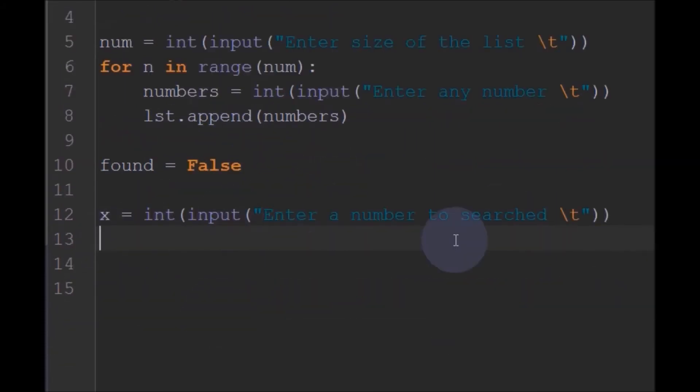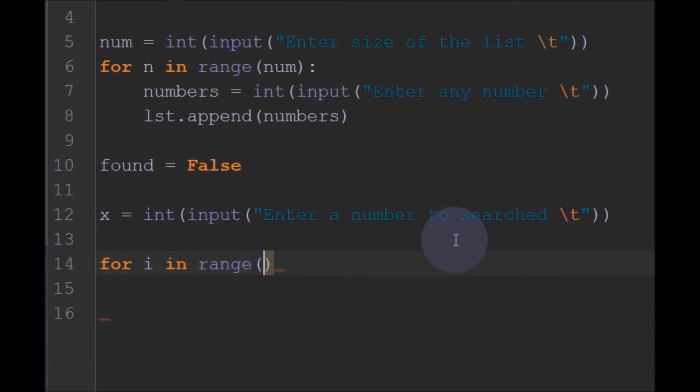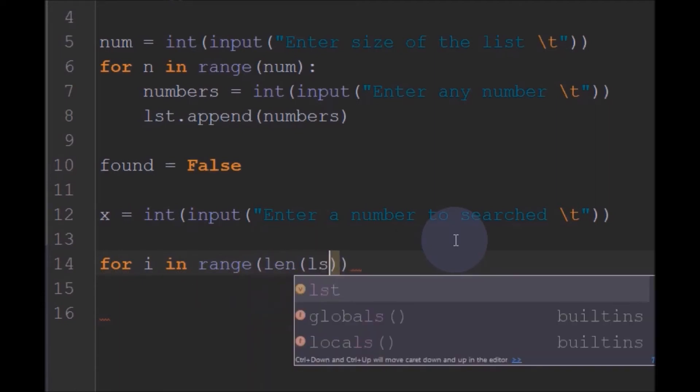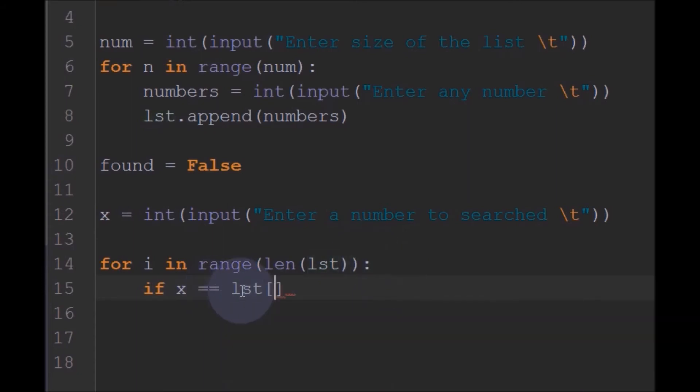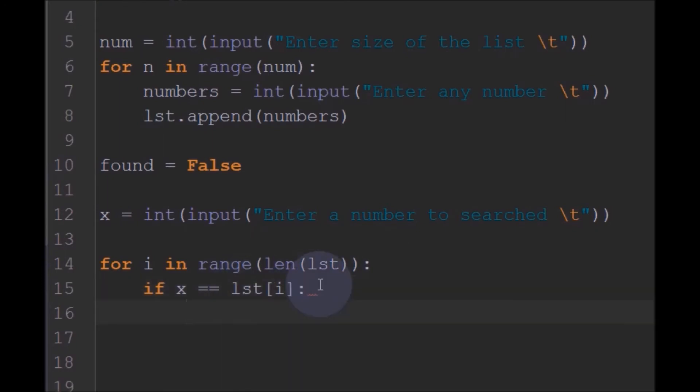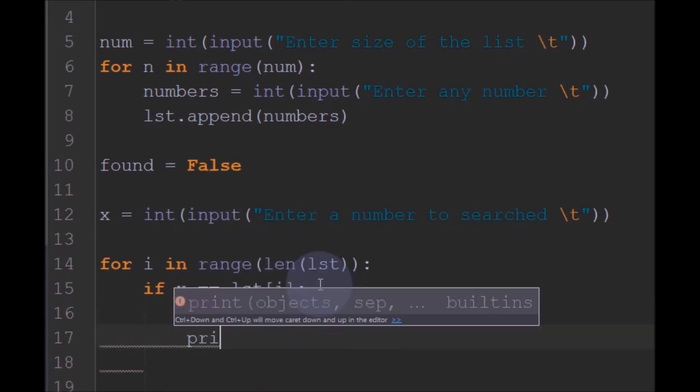So enter a number to be searched, and now I will write a for loop: for i in range of this list, length of the list. So this is the length of the list. I need to check each and every element in this list with this number. So I will write if x equal to equal to this list of i. So then if this x equal to equal to list of i, then we can say that number is found. So I will make this found to true.